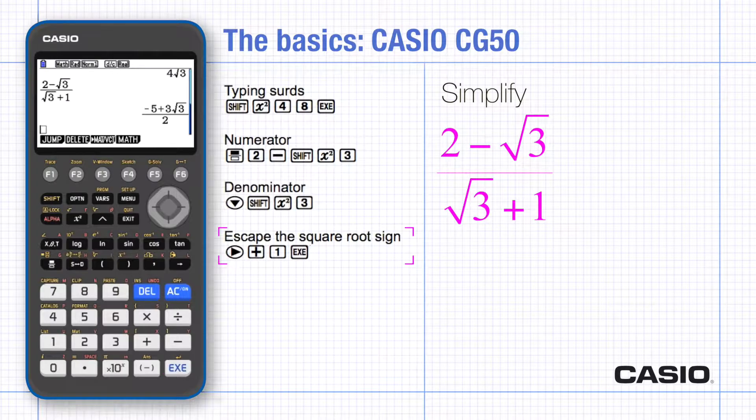You may notice there are fewer buttons on the CG50 than on your scientific calculator. All the missing functions and many other functions are inside one of the menus. Take some time to explore these. You can always find your way back to the original screen by pressing exit as many times as it takes.